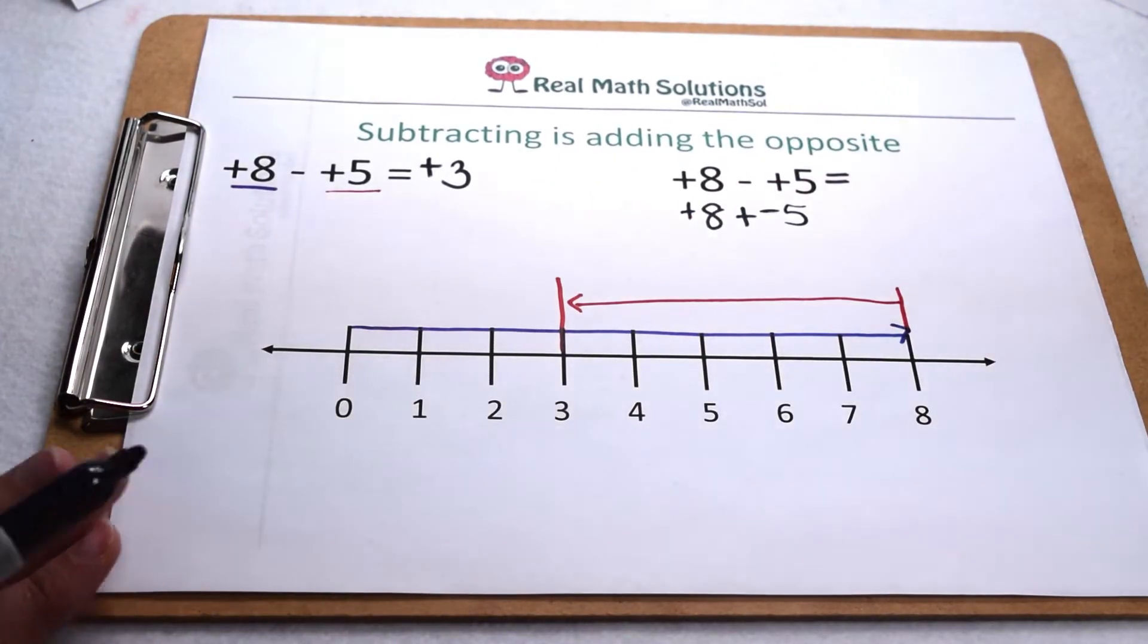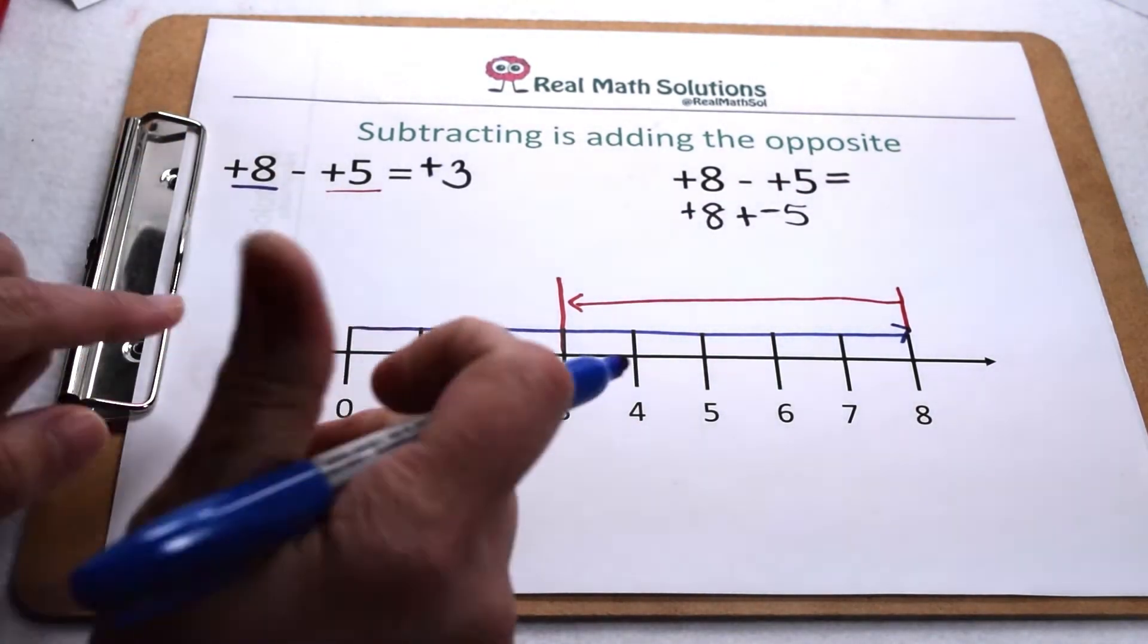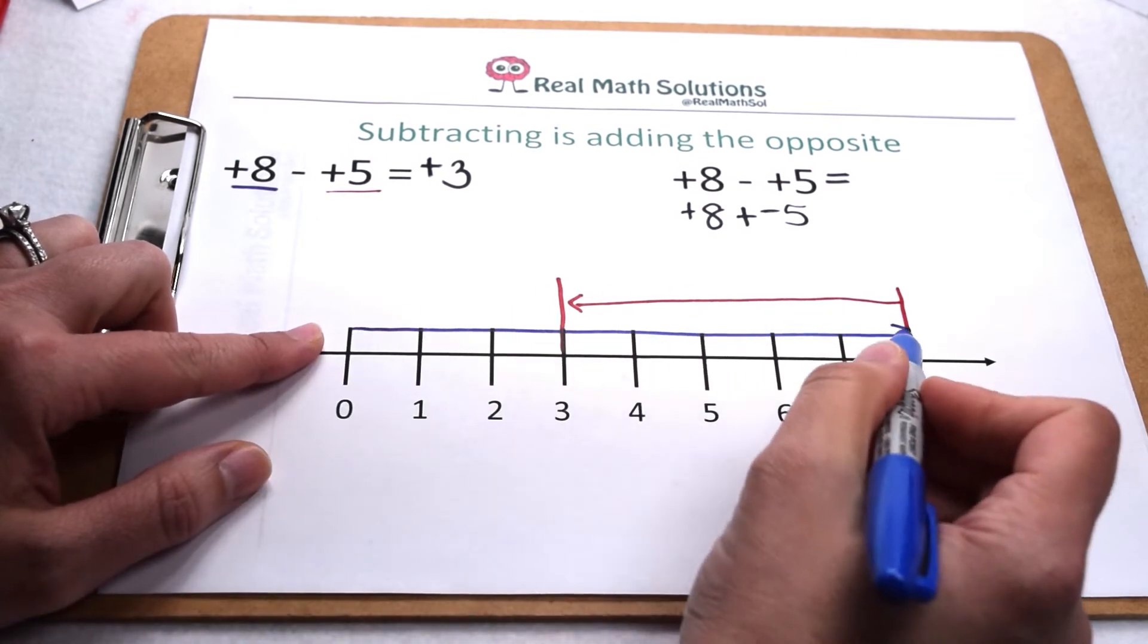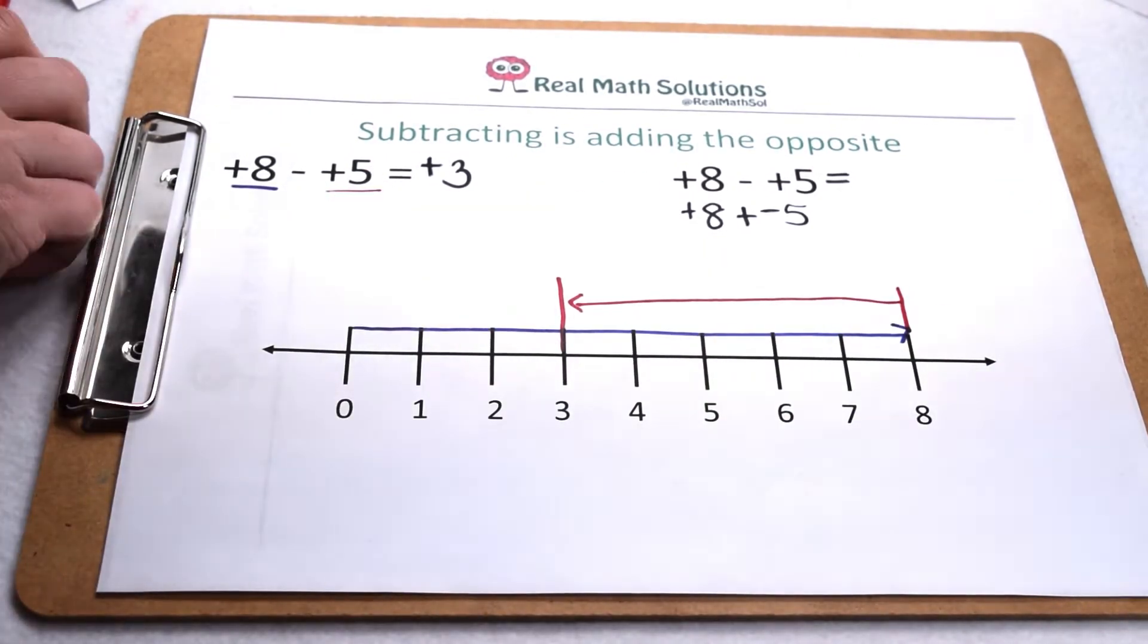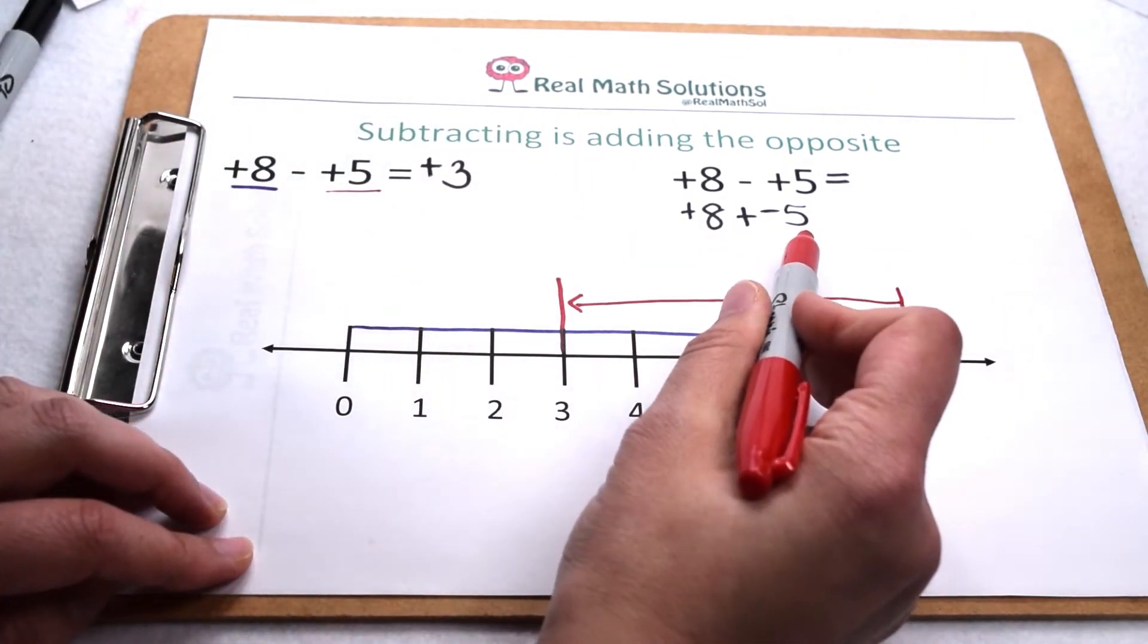Let's illustrate that out on the number line as well. Again, we would start at 0. Positive 8 would send us 8 places to the right, so that part stays the same. Next, we need to add negative 5.